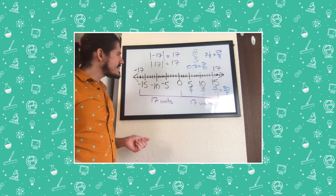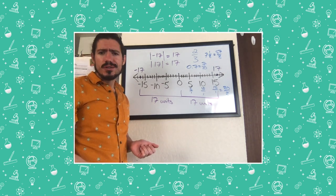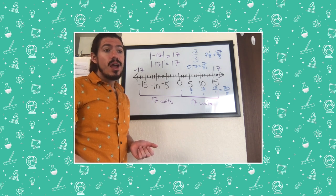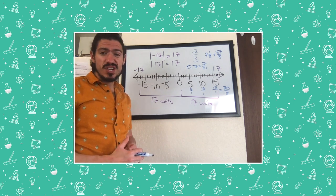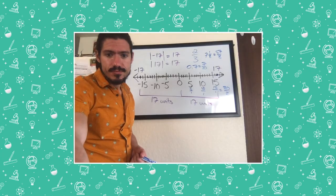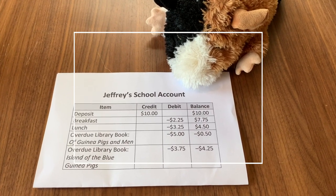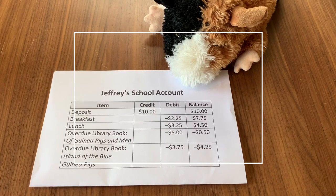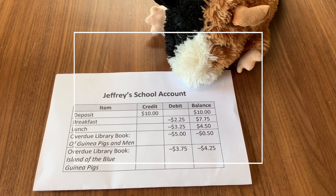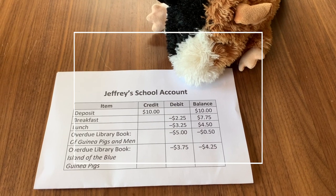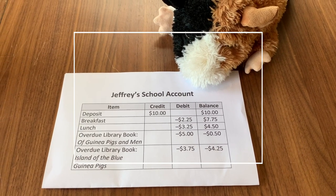What about those negative rational numbers? How do we put those in order? That can be a little bit tricky. Let's have a look at Jeffrey's lunch account statement to find out. We're going to look at Jeffrey's school account to help us understand more about rational numbers and, in particular, how we can order rational numbers. First, let's make sure we can all read the account.